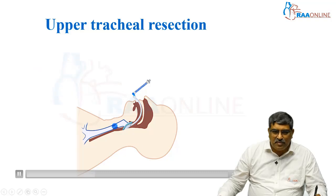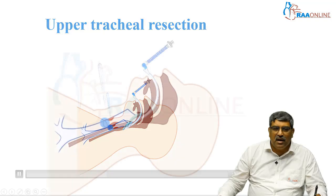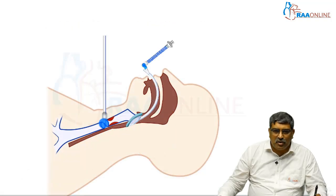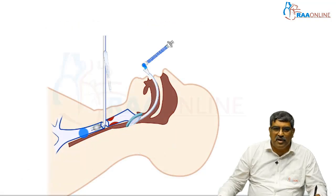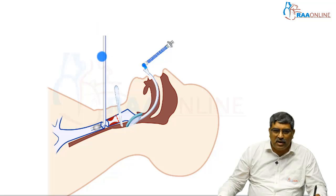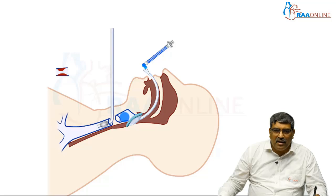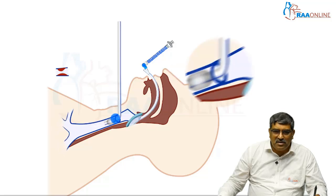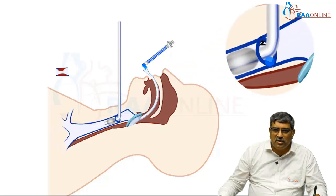An incision is made and the resection of the trachea at the lower part is done, and a standard endotracheal tube is passed in the lower part of the trachea. You will ventilate with this tube, then the tracheal resection is carried out and this part is re-anastomosed.